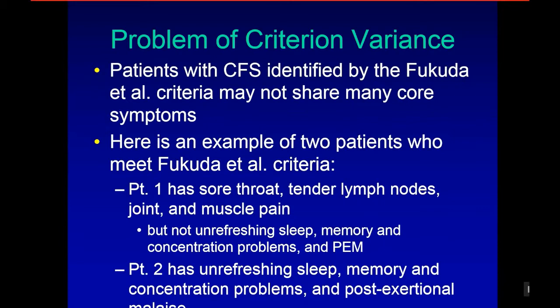The problem with criterion variance is that patients with CFS identified by Fukuda criteria may not share many core symptoms. For example, Patient 1 has sore throat, tender lymph nodes, joint and muscle pain — but not unrefreshing sleep, memory and concentration problems, or PEM. Patient 2 has unrefreshing sleep, memory and concentration problems, and post-exertional malaise. Patient 2 is more likely to have what we think of as ME.